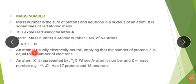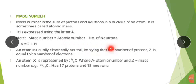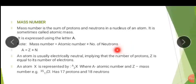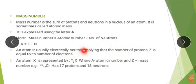Now, an atom is usually electrically neutral. What does this mean? Since we have protons in the nucleus of an atom and electrons outside the nucleus, protons are positively charged whereas electrons are negatively charged. In an atom, the number of protons equals the number of electrons, so the positive charges cancel out with the negative charges, making an atom electrically neutral.